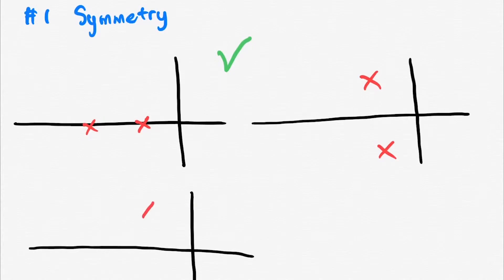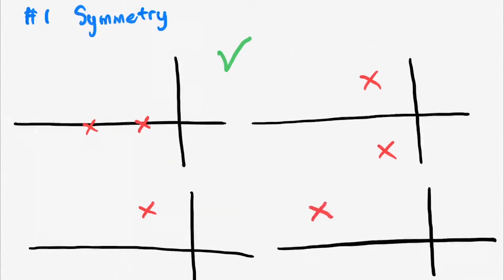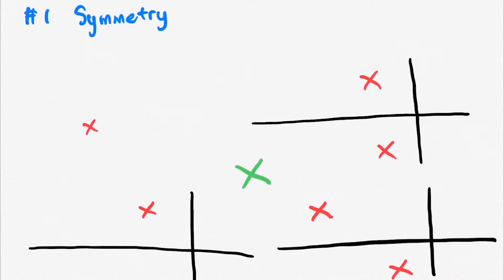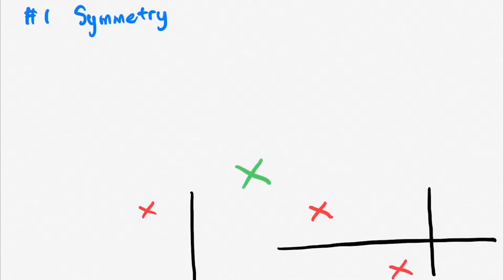The first criterion is symmetry. The root locus will be symmetrical around the real axis, and complex poles and zeros will always have conjugate pairs.